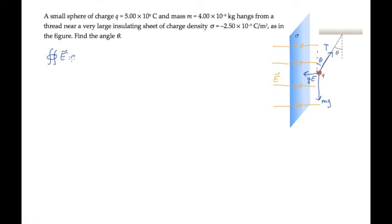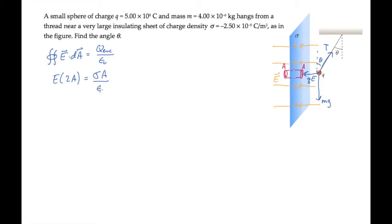The integral over a closed surface of E dot dA equals the charge enclosed by that surface divided by epsilon naught. Given the planar symmetry in this problem, the Gaussian surface we need is typically called a pillbox — drawn like a cylinder oriented perpendicular to the sheet. All of the electric field lines pass through the two ends, each of which has area A. Since the electric field is perpendicular to the sheet and aligned with the axis, the integral of E dot dA becomes the electric field magnitude times twice A. That equals the charge density times the cross-sectional area, divided by epsilon naught.